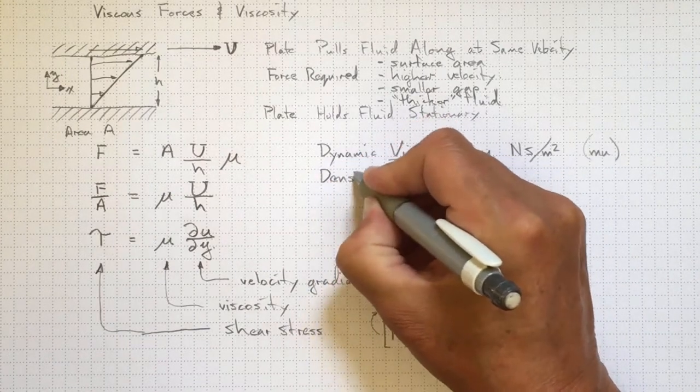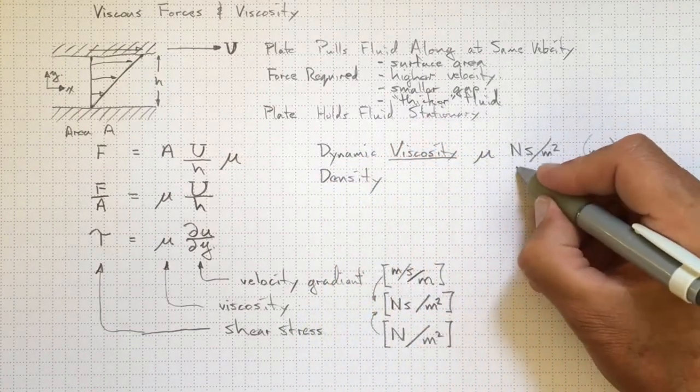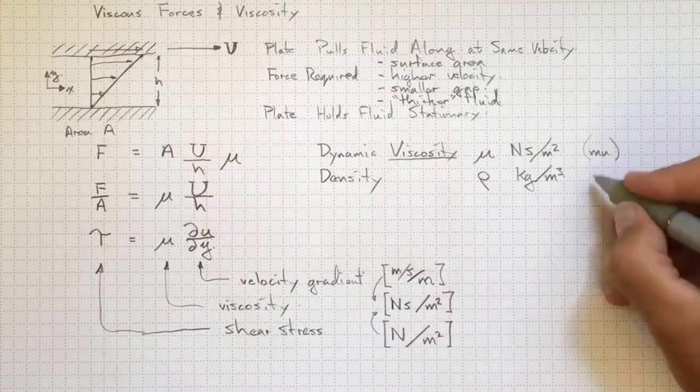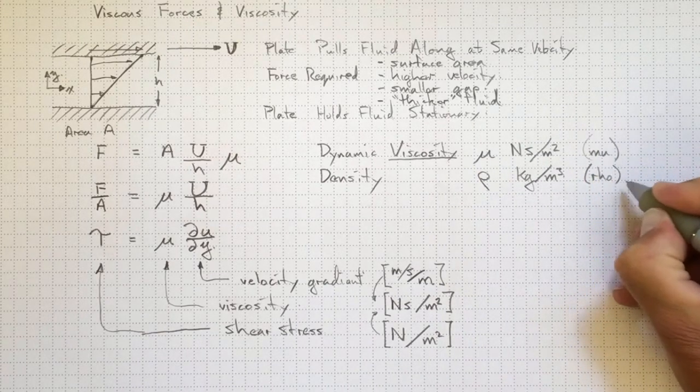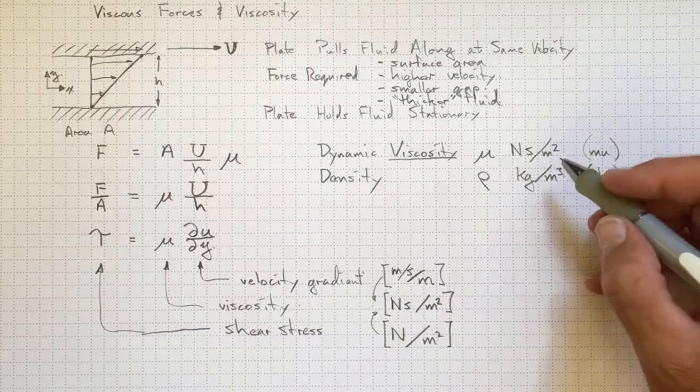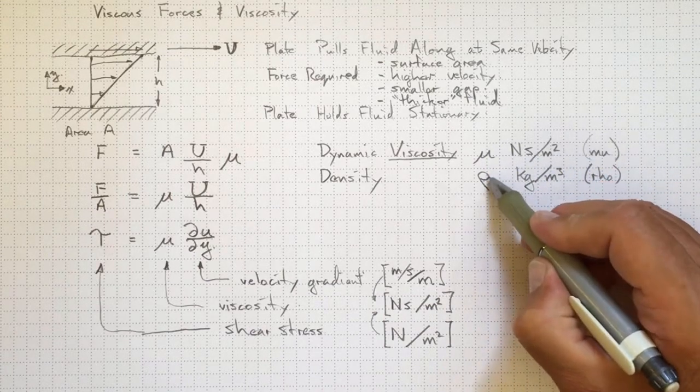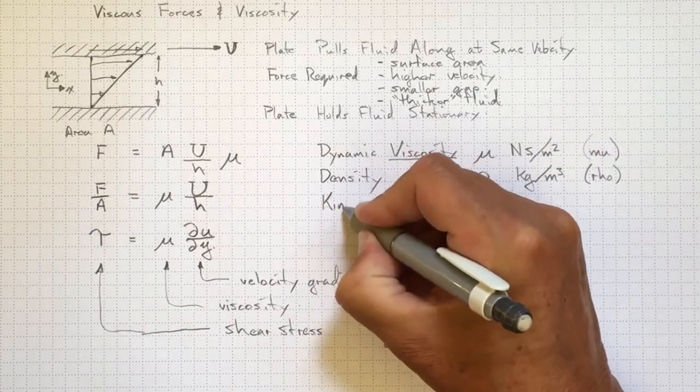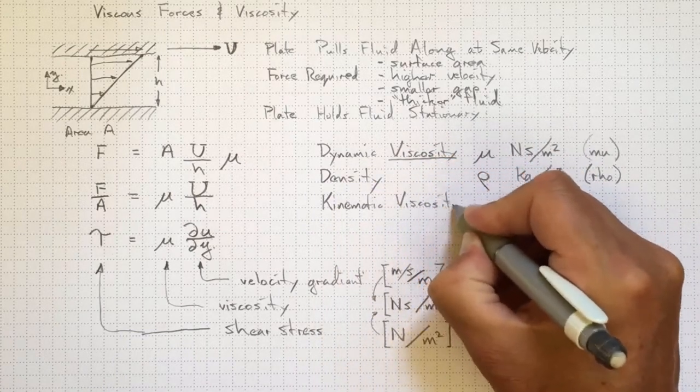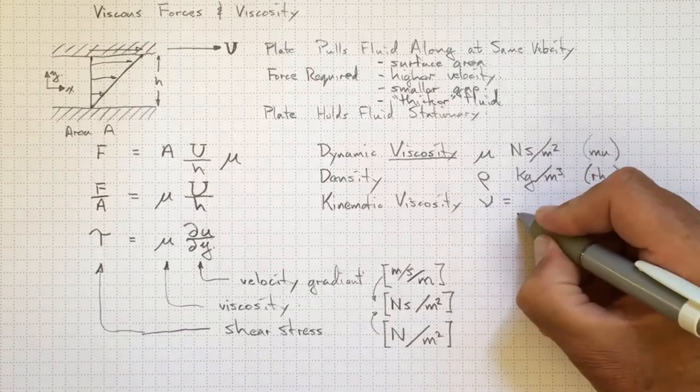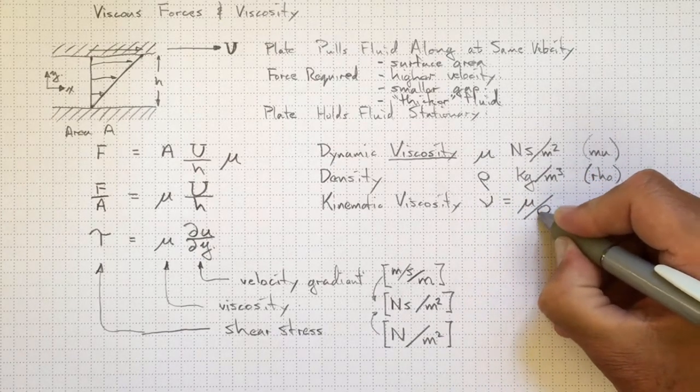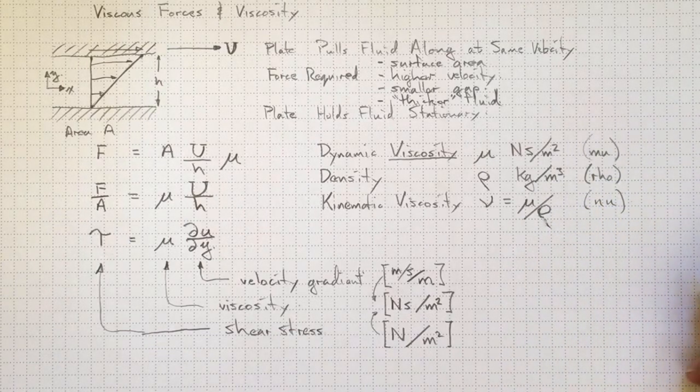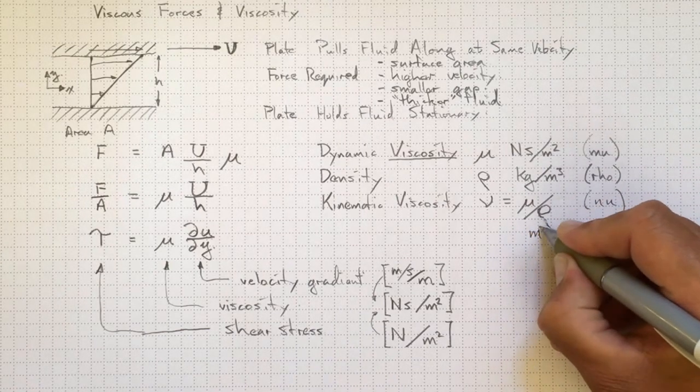Fluid also has density, as you've learned in thermodynamics and elsewhere. And that's the amount of mass, kilograms, per cubic meter of fluid. And it's always represented with rho, the Greek letter rho, spelled R-H-O. Very often we're interested in comparing viscous forces with inertial forces, so the ratio of the viscosity and the mass are going to turn out to be important. And therefore we define a kinematic viscosity, nu, equal to just the ratio of the dynamic viscosity divided by the density. The units for that are meters squared per second.